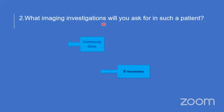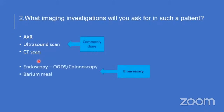What imaging investigations should you order for such a patient? Commonly: abdominal X-ray, ultrasound, and CT scan. If necessary, we can proceed to endoscopy, such as upper endoscopy or colonoscopy, and barium meal studies if needed.